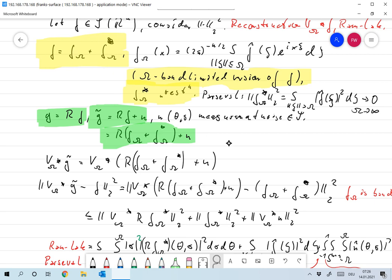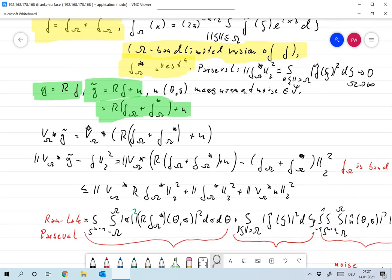What we can compute is v_omega convolution with g tilde. For g tilde I plug in my expression over here, and so that's the approximation depending on omega which I can actually compute.